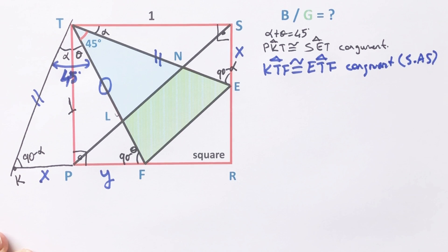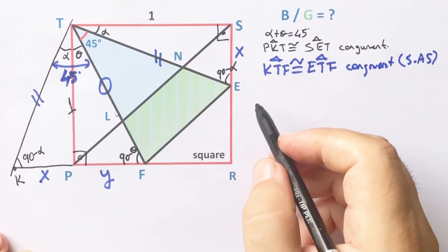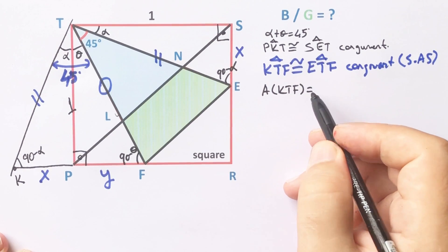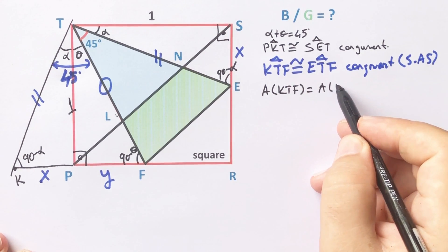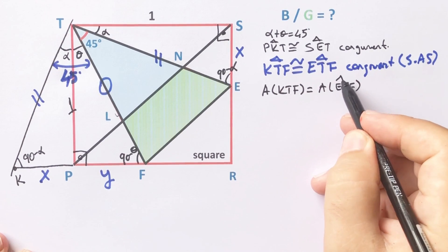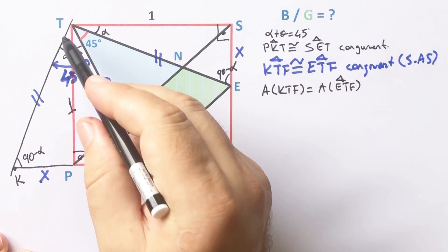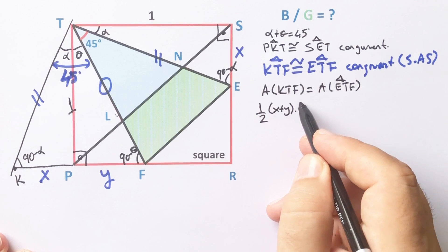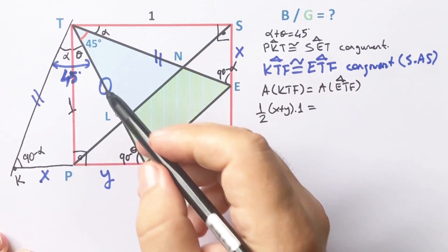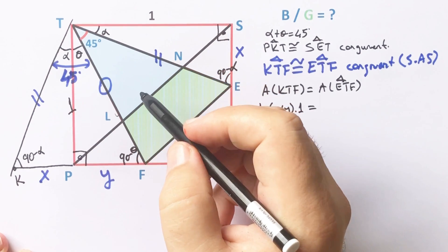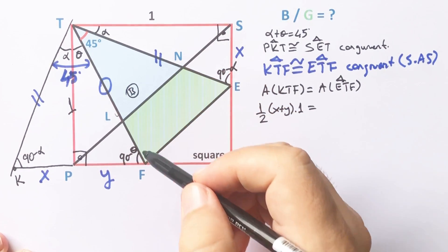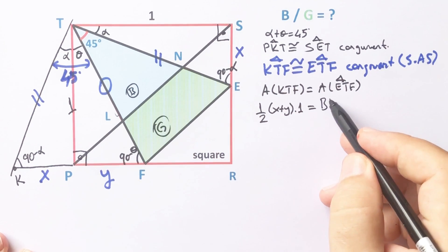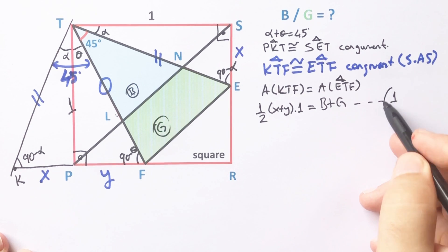Since these are congruent triangles, the area of this triangle must equal the area of the other. The area of this triangle equals half of base times height, which equals the blue area p, and the green area equals g. So the area equals p plus g. This is the first equation.